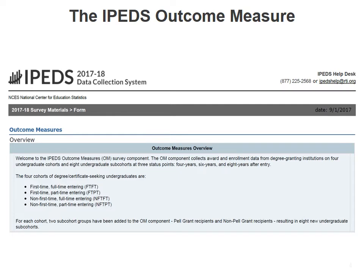This page shows what the first page of that IPEDS outcome measure survey looks like. For the 2017-18 collection, there are now four cohorts for which you have to report: first-time entering, full-time entering, et cetera. We'll talk a little bit more about that in the next few slides.